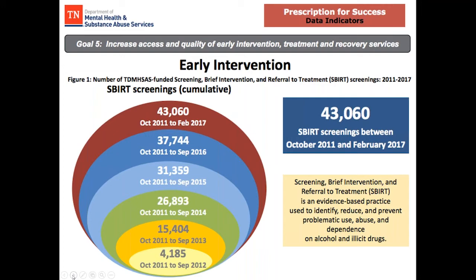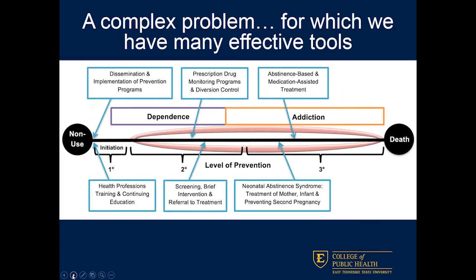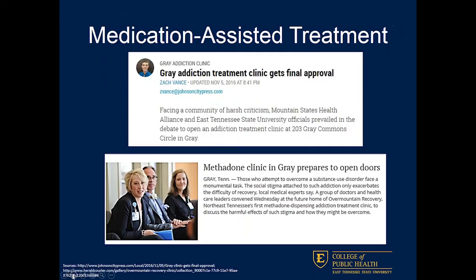Further down the continuum, for folks suffering from proper opioid use disorder, it's more appropriate to engage in medication-assisted treatment or abstinence-based treatment. Medication-assisted treatment has historically been met with some resistance both by the provider community and the recovery community, with all kinds of different stigmas associated with it. One real need in our area was that there were only 12 methadone clinics in the entire state of Tennessee, and the closest one was about 100 miles from here down in Knoxville. Tennessee residents in northeast Tennessee didn't have access to methadone.